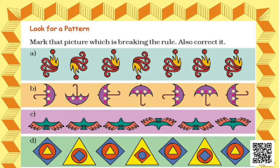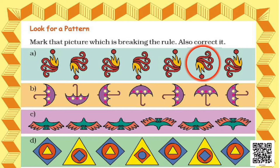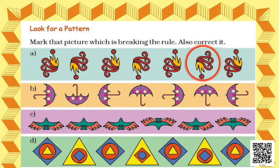In the next page, we have another task — look for a pattern. In bit A, there are seven pictures and you can observe from the first four that they follow a pattern of clockwise rotation of 180 degrees. But after the fifth picture, the sixth picture is the same as the fifth, which means it is breaking the rule. After the fifth picture, the sixth picture should rotate 180 degrees and the rounded portion of the picture should be downwards. So we need to correct the sixth picture to maintain the pattern.